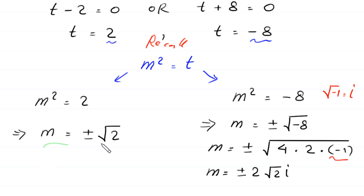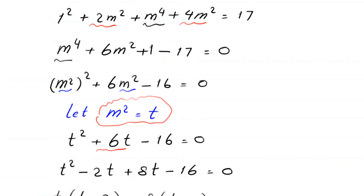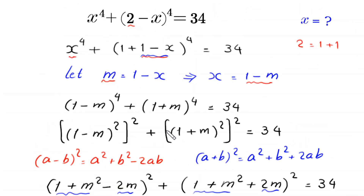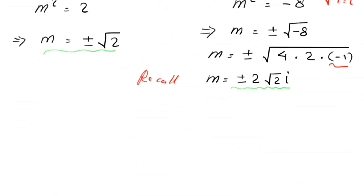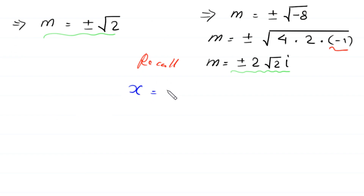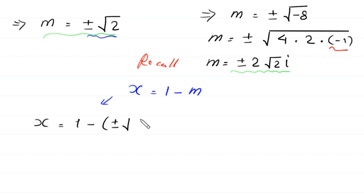So the values of m are plus or minus square root of 2 and plus or minus 2 root 2 i. To find the values of x, we recall that x equals 1 minus m. When m equals plus or minus square root of 2, the equation becomes x equals 1 minus (plus or minus square root of 2).